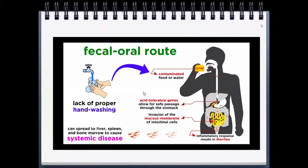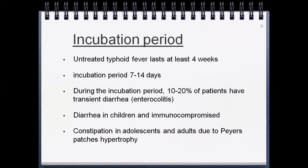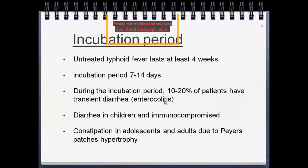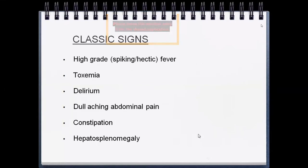Untreated typhoid fever may last at least four weeks. The incubation period is 7 to 14 days. During the incubation period, 10 to 20 percent of patients may have transient diarrhea due to enterocolitis. Diarrhea is more common in children and immunocompromised patients. Constipation is more common in adolescents and adults due to Peyer's patches hypertrophy causing swelling at the ileocecal junction.